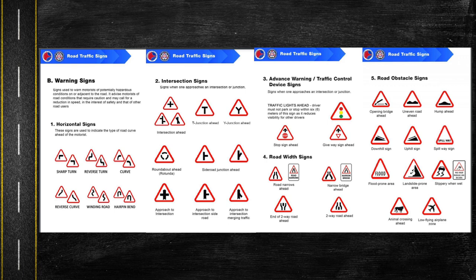Before we continue discussing the types of warning signs, just to give you a heads up: a danger warning sign is usually designed as a triangle, and the triangle is colored. I'm discussing this so we can be well-informed about what traffic signs look like, so that when we see them on the road we won't be ignorant — we'll have an idea of what the traffic sign or road sign means.